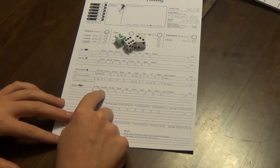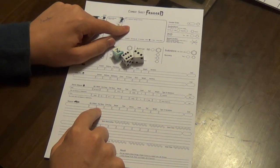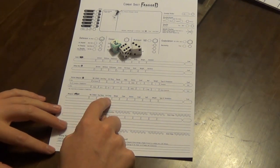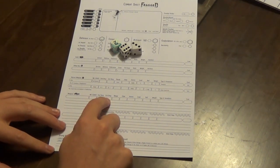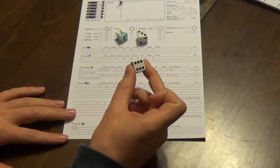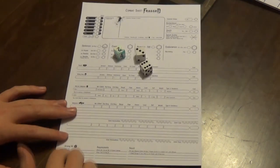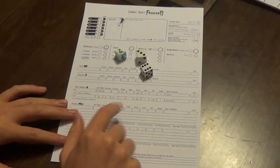Endurance damage—that's whenever you hit your opponent, you automatically do that much endurance damage. Critical damage—that's how much attribute damage you do with a critical hit, and you score critical hits by spending sixes from hits on those. That's how you kill people, by doing attribute damage there.